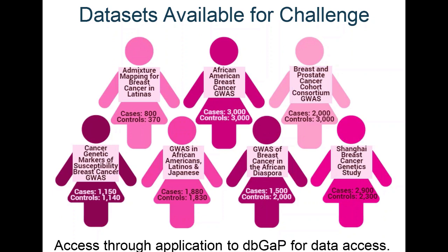In addition, the three datasets that were already in dbGaP — those investigators provided even more additional imputed data for the purposes of the competition, and dbGaP worked with us to make those ready in time. From this diagram we can also see different racial and ethnic groups represented, providing an opportunity to look at race differences in breast cancer. We also worked with the Data Access Committees to facilitate and expedite data access for registered participants.